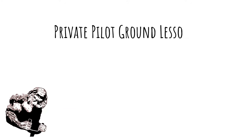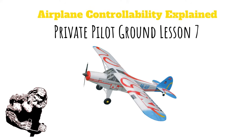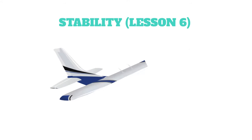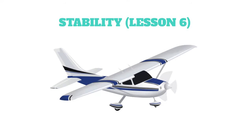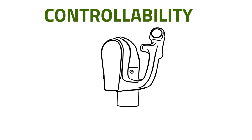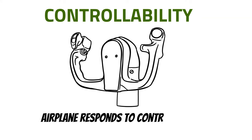Thanks for joining me again on the free pilot training channel. Today we're going to be talking about airplane controllability. In the last lesson we discussed airplane stability, and we're going to be building on that today. That's because airplane stability also affects airplane controllability. In the simplest terms, controllability just means that the airplane will respond well to your control inputs.